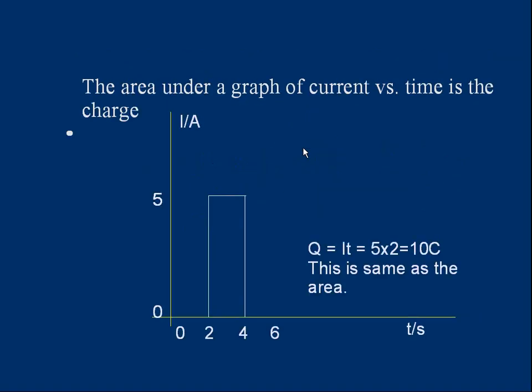We can use a different type of graph to help us as well. Here's a graph of current against time. In the first two seconds, nothing happens. And the current goes up to 5 amps, stays 5 amps, and then drops back to zero. So we've got 5 amp current for two seconds. What's charge? Well, easy. Charge Q equals IT. It's 5 times 2. It's 10 coulombs. Look at the area of this rectangle we've drawn. How do you work out the area? It's height times base. It's 5 times 2. It's 10 coulombs. It's the same as the value of charge we've just calculated. So if you've got a current time graph, the area underneath is the charge.